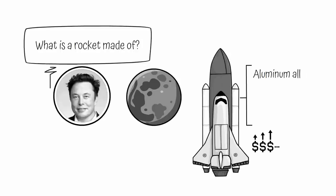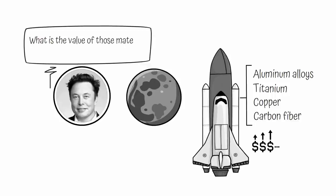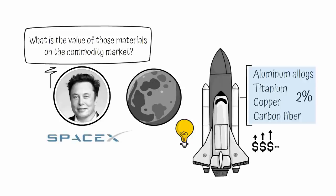Well, aerospace-grade aluminum alloys, plus some titanium, copper, and carbon fiber. Then he wondered, what is the value of those materials on the commodity market? After some research, Musk discovered that the materials made up roughly 2% of a typical rocket price. After a simple examination of the underlying components, Musk saw an opportunity to create a better solution to his rocket to Mars problem. Years later, SpaceX was born.